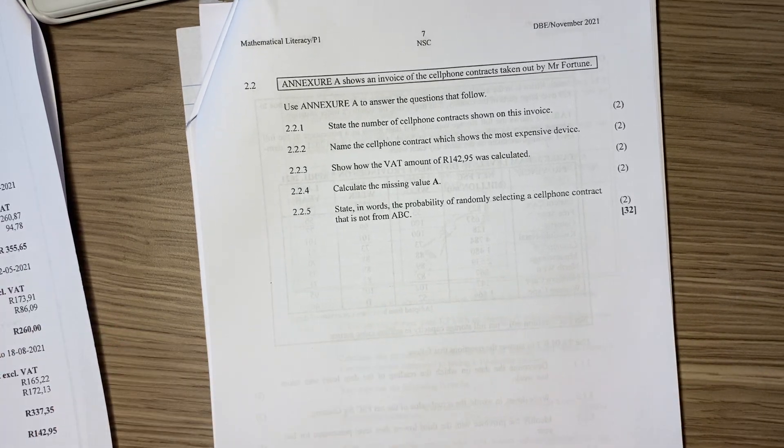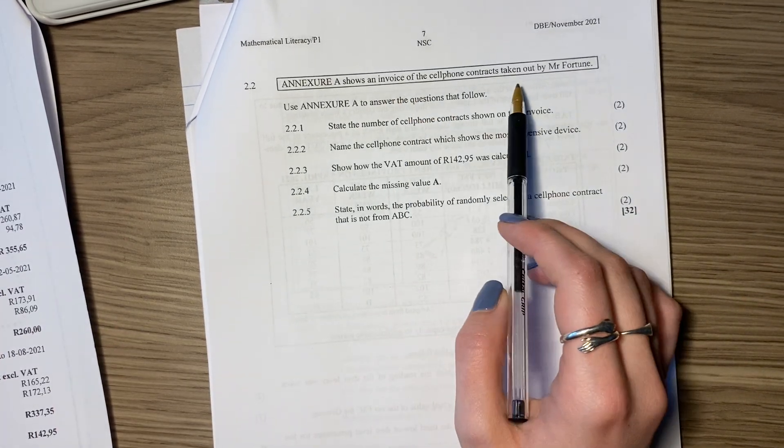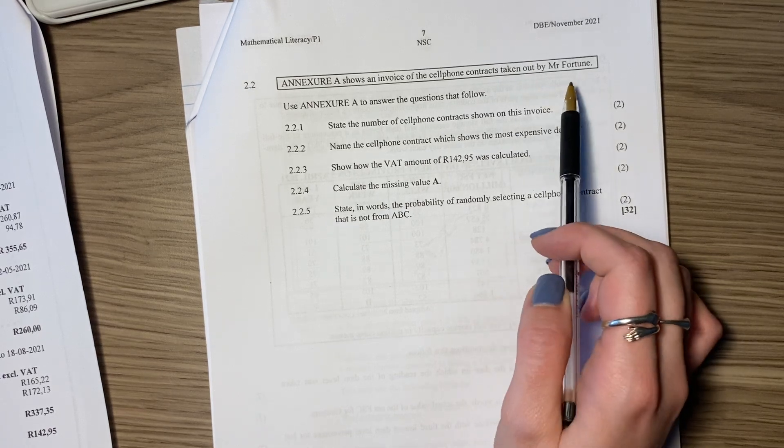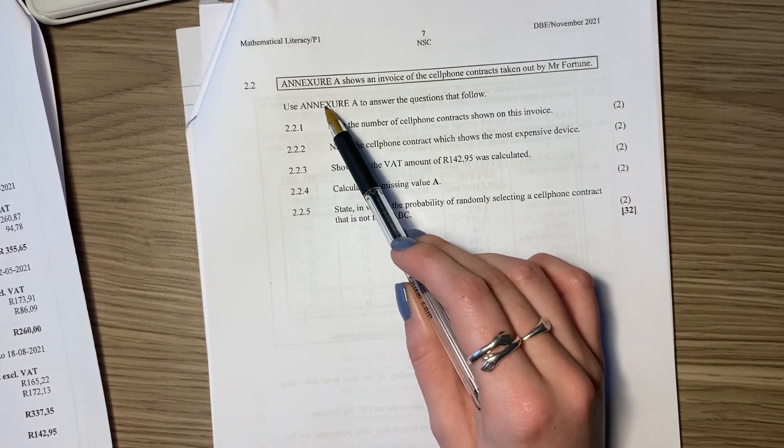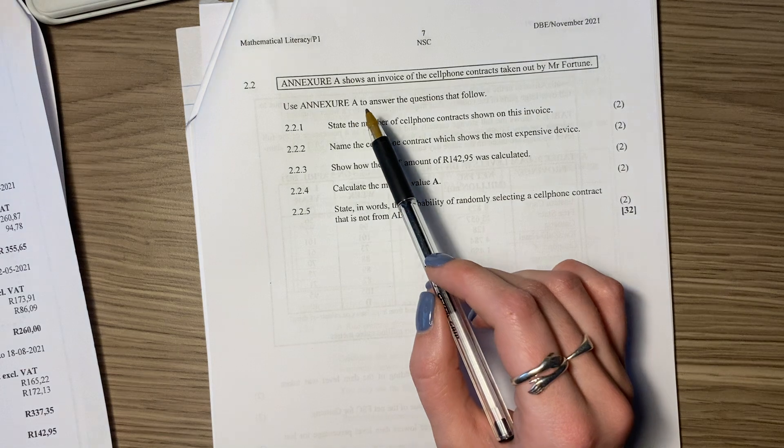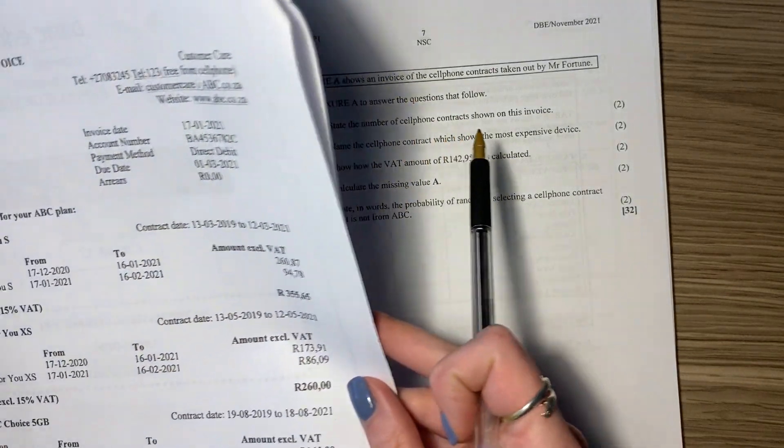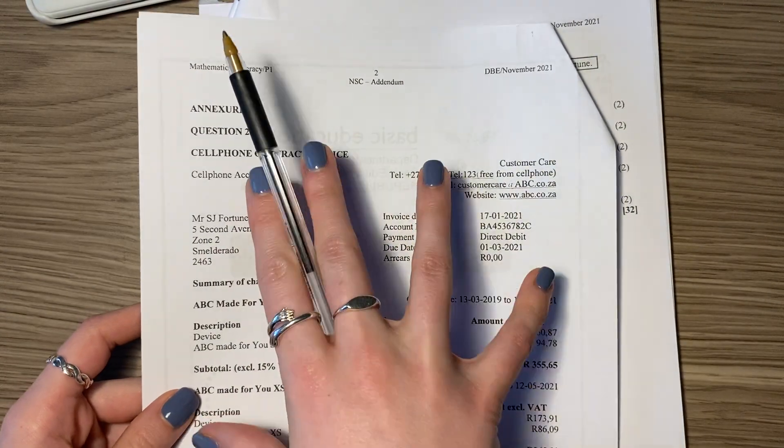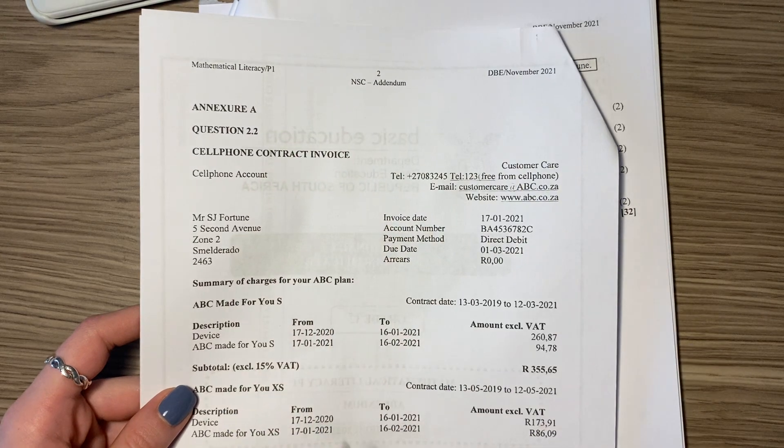Right, 2.2 says annexure A shows an invoice of the cell phone contracts taken out by Mr. Fortune. Use annexure A. Whenever you see that, please go find your annexures. Here's my annexure. Make sure you have it. You cannot do this question unless you have your annexure.